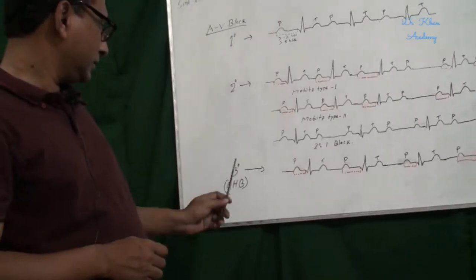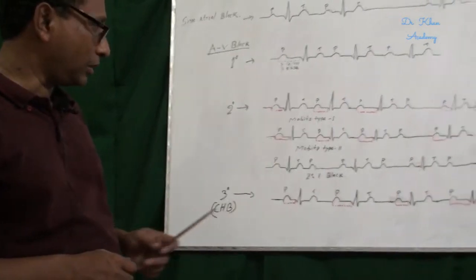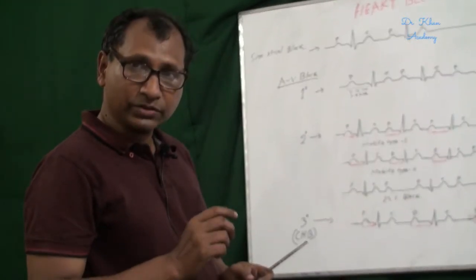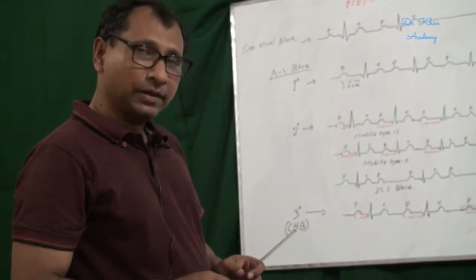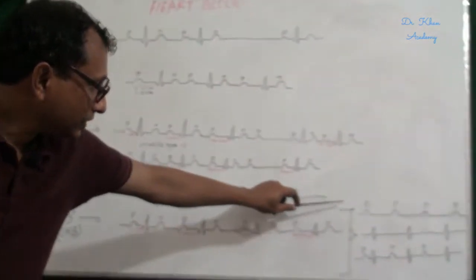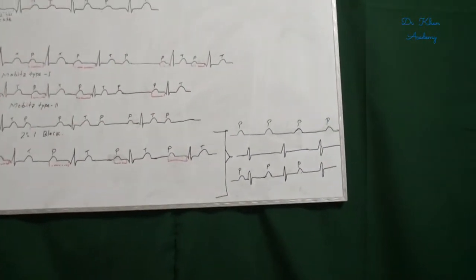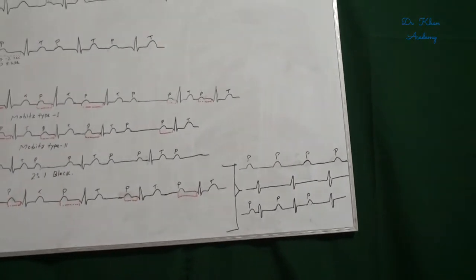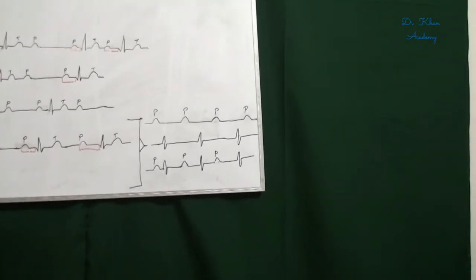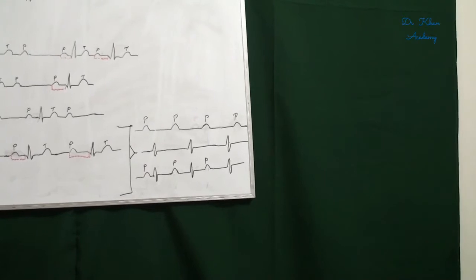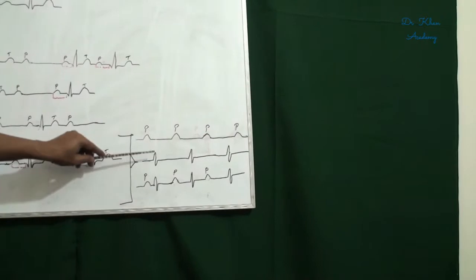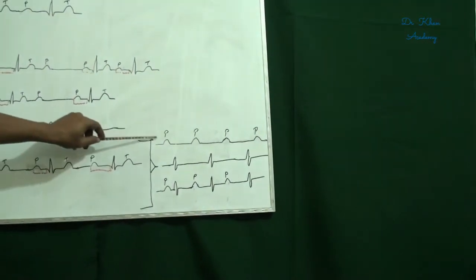In third degree AV block or complete heart block, no SA node impulse is conducted to the ventricle. In this figure, the atrium contracts by the sinoatrial impulse so a P wave is formed, and the ventricle functions by its Purkinje fibers so the QRS complex is formed by the Purkinje fibers, independent of the P wave.